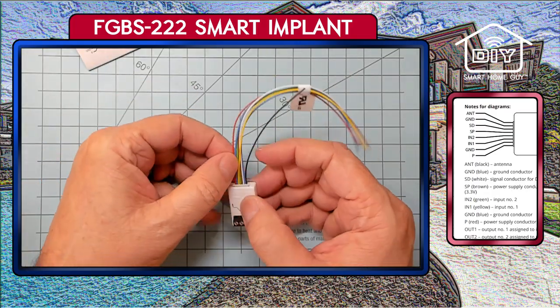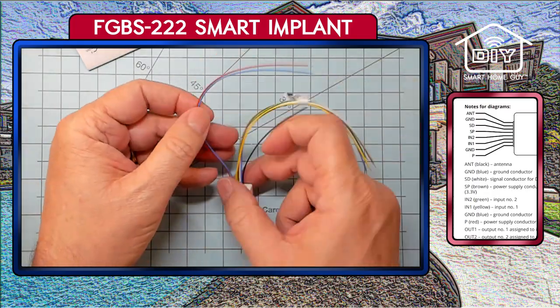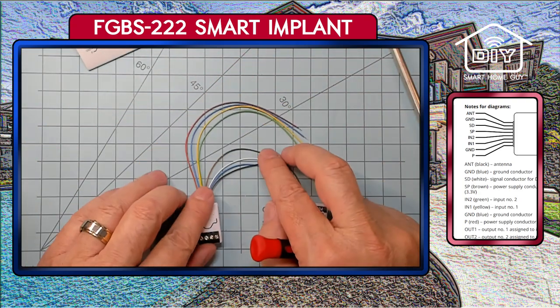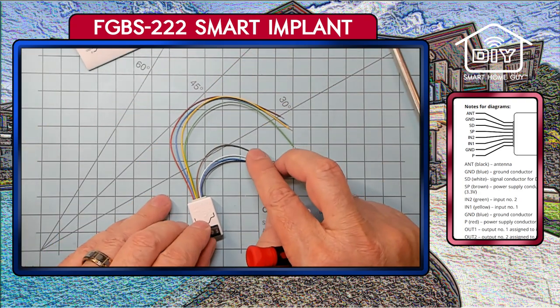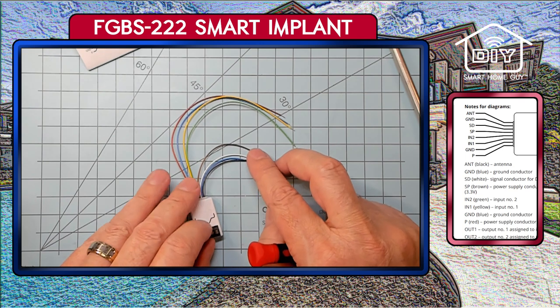These first two wires are power and ground for the device. The next two wires can be used for either binary or analog sensors. We're going to use the binary sensors in today's project.